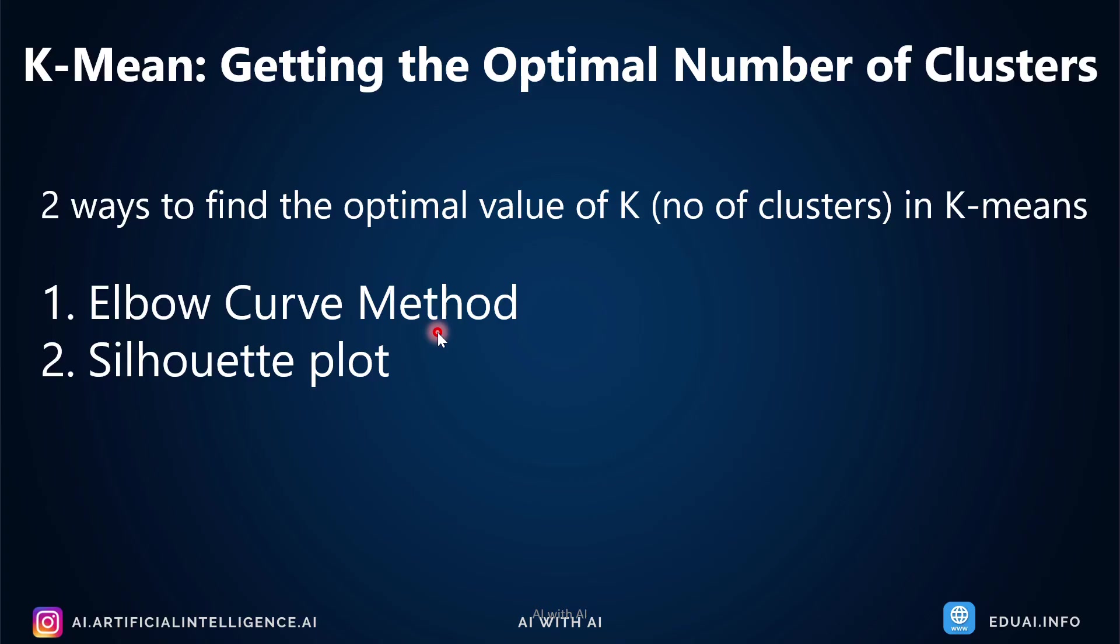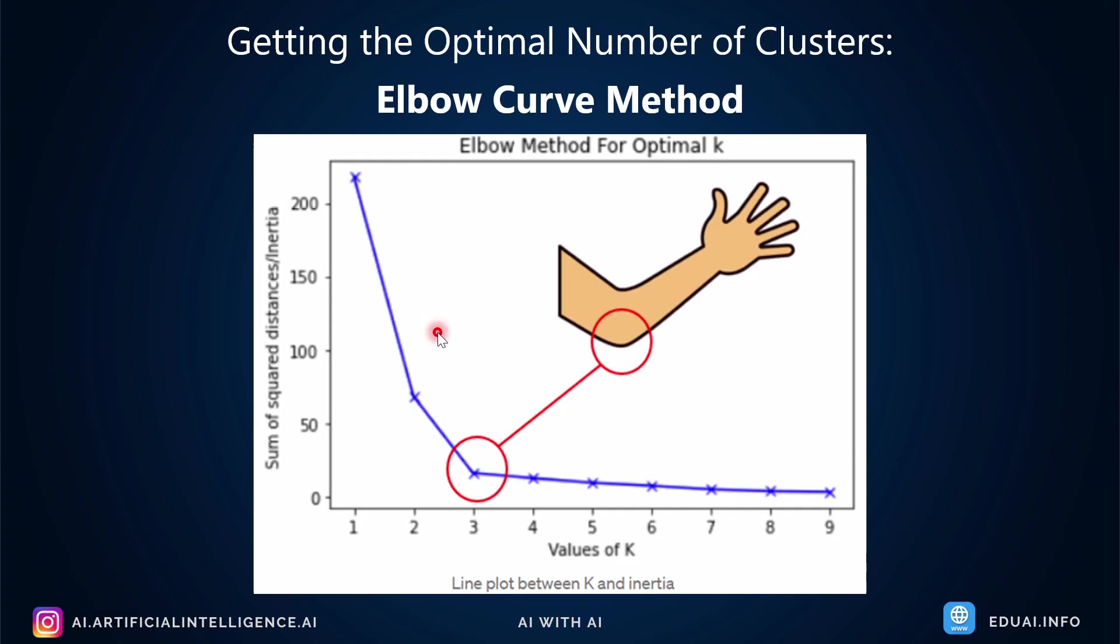Let's go. The first way, that is elbow curve method, is really easy. If you see here, our goal is to get the optimal number of clusters, right? So elbow curve method says you need to identify the elbow within the curve. So where do you see your elbow? This is where you see your elbow from this curve. So the optimum value of clusters is 3.